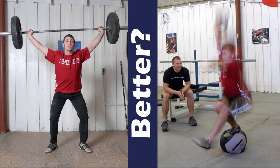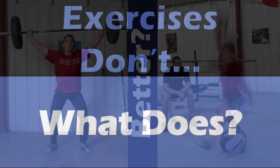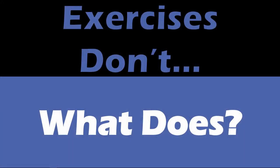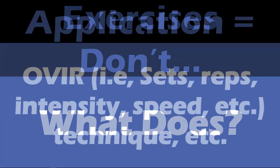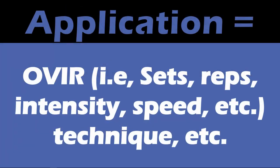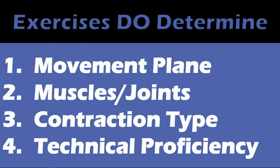So if we look at these two pictures of overhead squat exercises and try to determine which is quote-unquote better, we can't — because exercises don't determine adaptation. What determines adaptation is the application: the sets, reps, intensity, speed, technique. The exercises do determine certain things like the movement plane, the muscles you're using, the types of contractions, and the technical proficiency required.